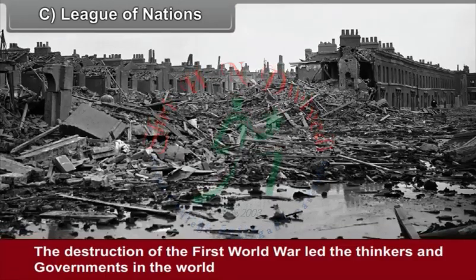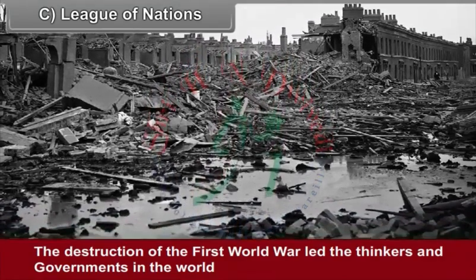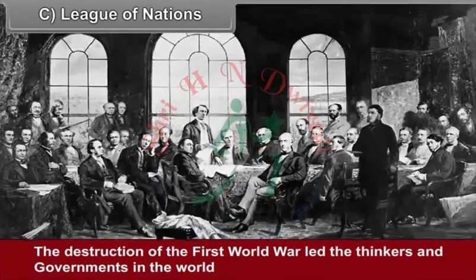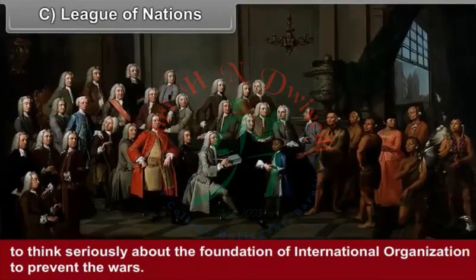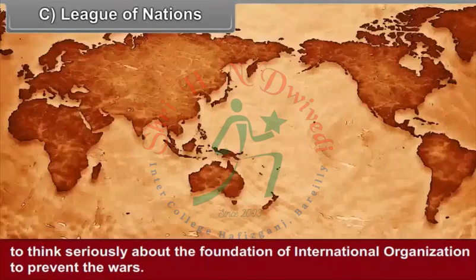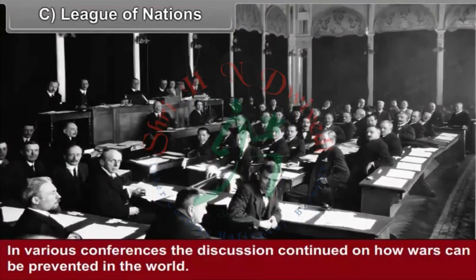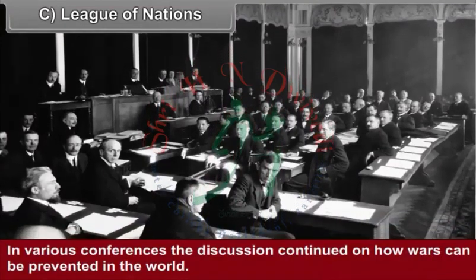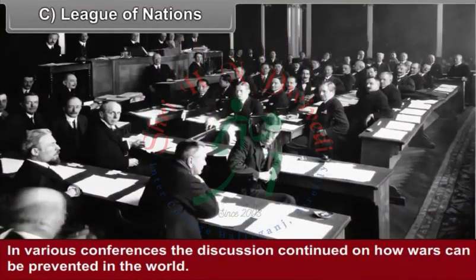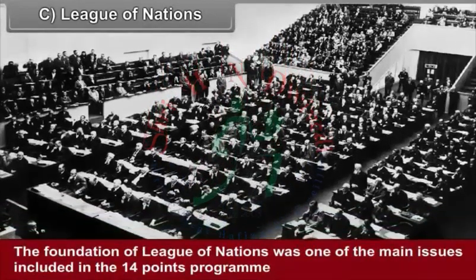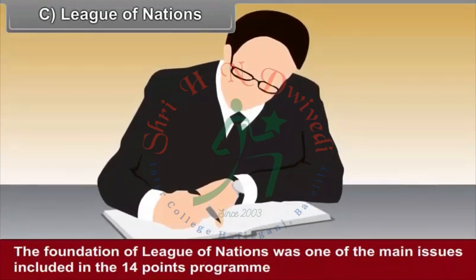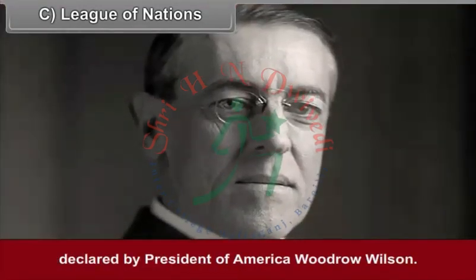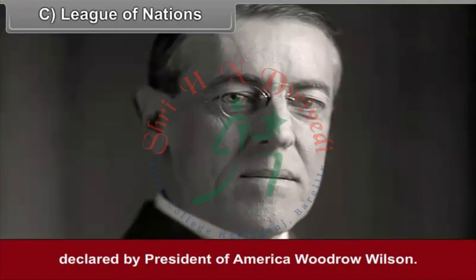League of Nations. The destruction of the First World War led thinkers and governments in the world to think seriously about the foundation of an international organization to prevent wars. In various conferences, discussions continued on how wars can be prevented. The foundation of the League of Nations was one of the main issues included in the 14 points program declared by President of America, Woodrow Wilson.